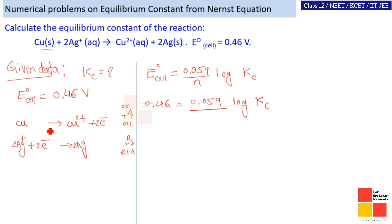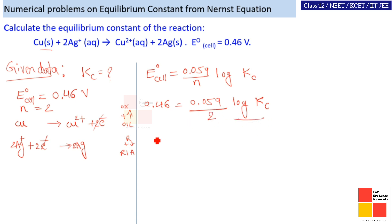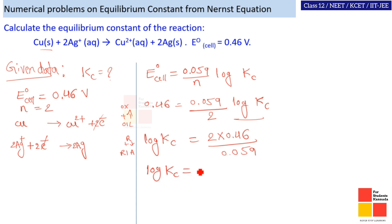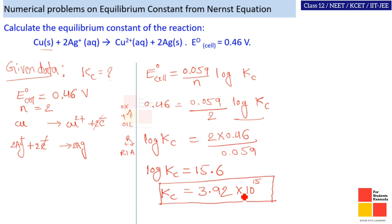So log Kc equals n times 0.46 divided by 0.059, which is 2 into 0.46 divided by 0.059. Log Kc equals 15.6. To find Kc, we take the antilog: Kc equals 3.92 into 10 power 15. Note that the equilibrium constant has no units. This is a very important numerical problem — to find Kc from E naught cell, use this formula.